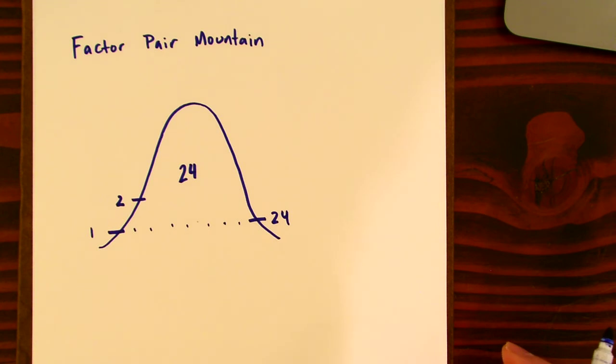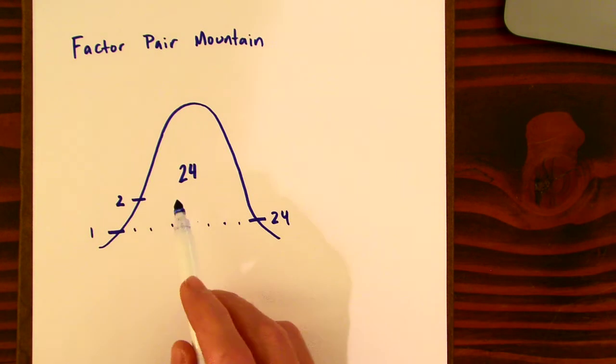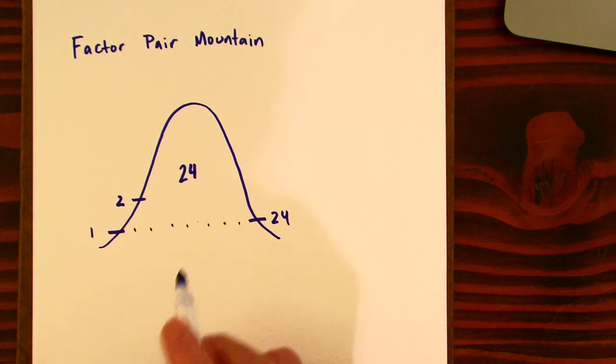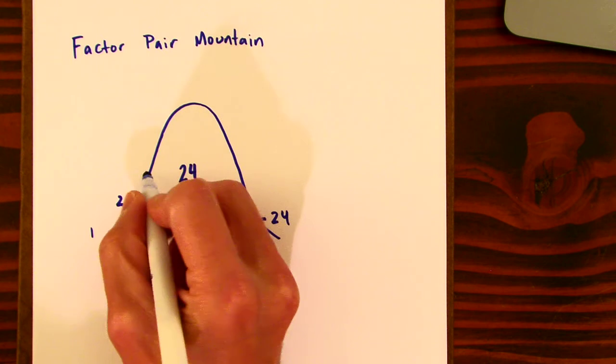Does three go in? And here, we might know that three times eight is 24, or we might know a little divisibility rule: that if we add the sum of the digits, two plus four, and we get six, if the sum is divisible by three, then the number itself is divisible by three. That's a nice one. So we know three goes in.